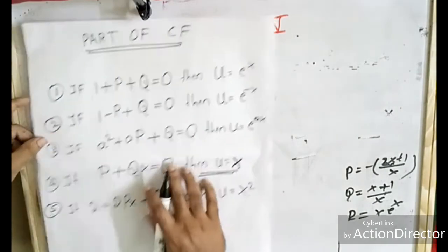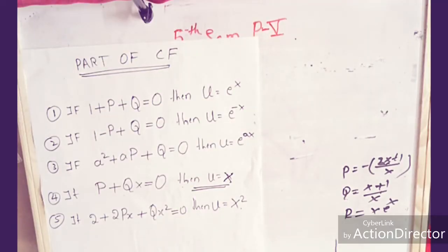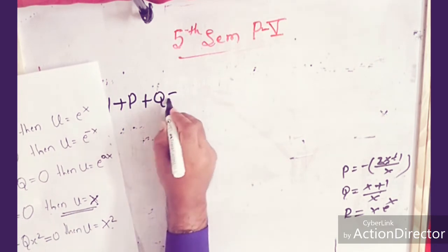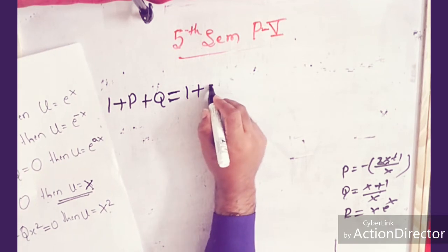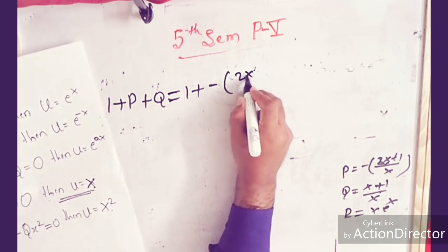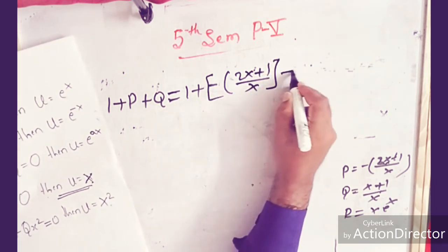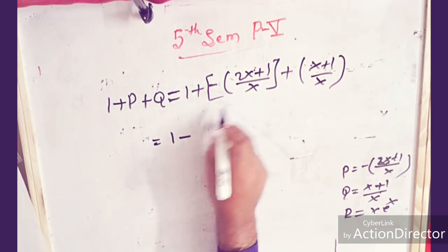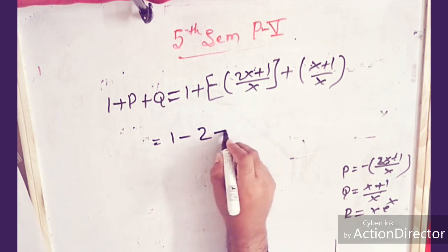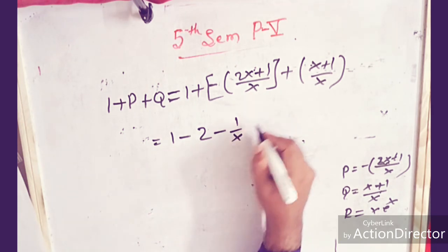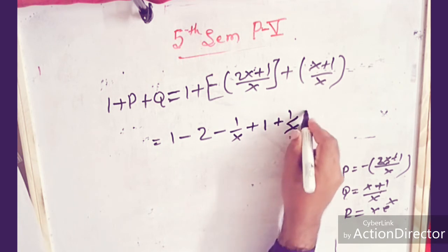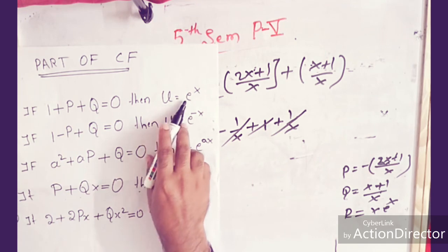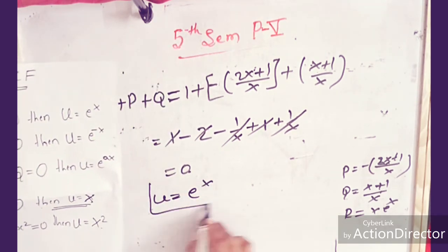We check if 1 + P + Q equals 0. That is: 1 plus [minus(2x plus 1)/x] plus [(x plus 1)/x]. Simplifying: 1 minus 2 minus 1/x plus 1 plus 1/x. The 1/x terms cancel, and plus 2 minus 2 cancel, giving 0. So 1 + P + Q equals 0, and therefore u equals e^x. The part of the complementary function is e^x.